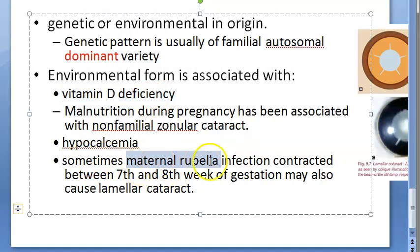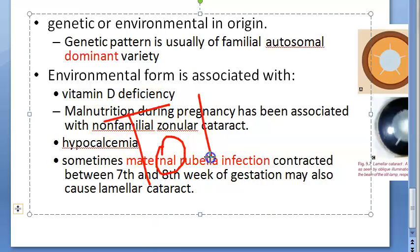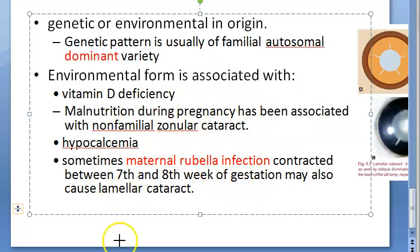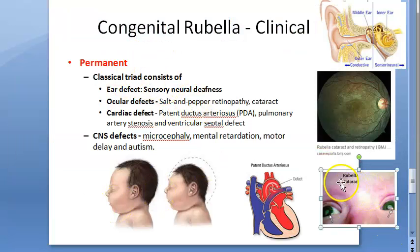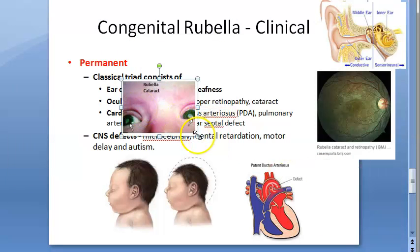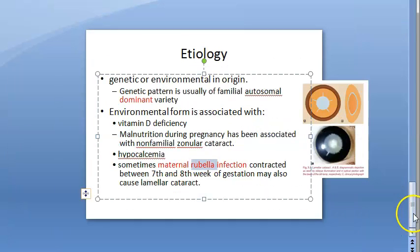Maternal rubella infection contracted during the seventh or eighth week of gestation may also cause lamellar cataract. Rubella is part of the TORCH infections screened for in pregnancy — the 'R' in TORCH stands for rubella. As seen in congenital rubella syndrome, rubella cataract is one of the manifestations.